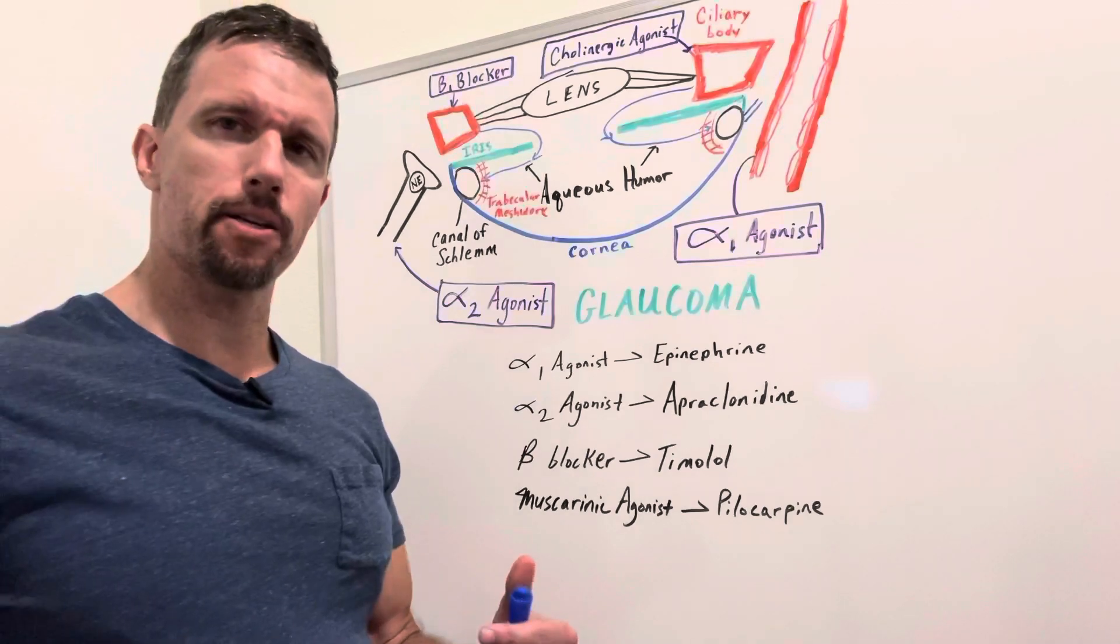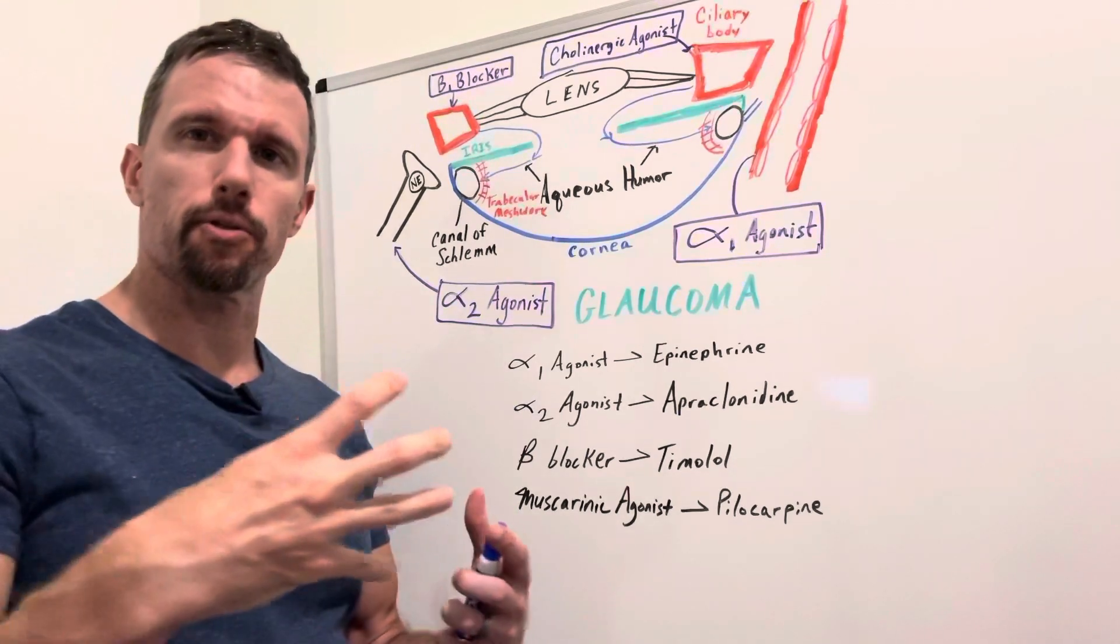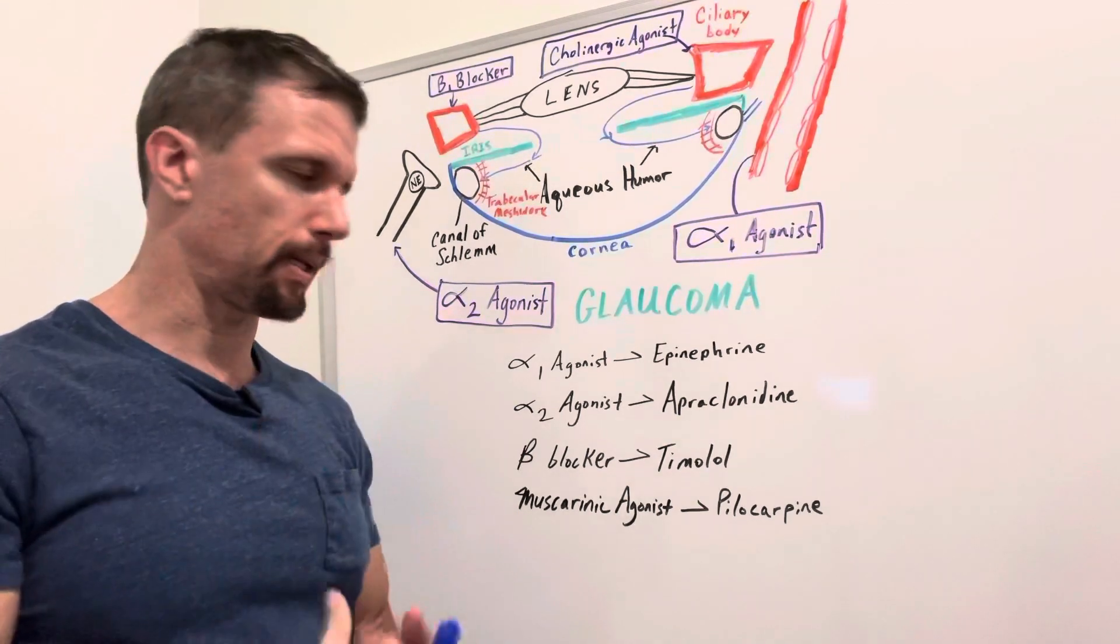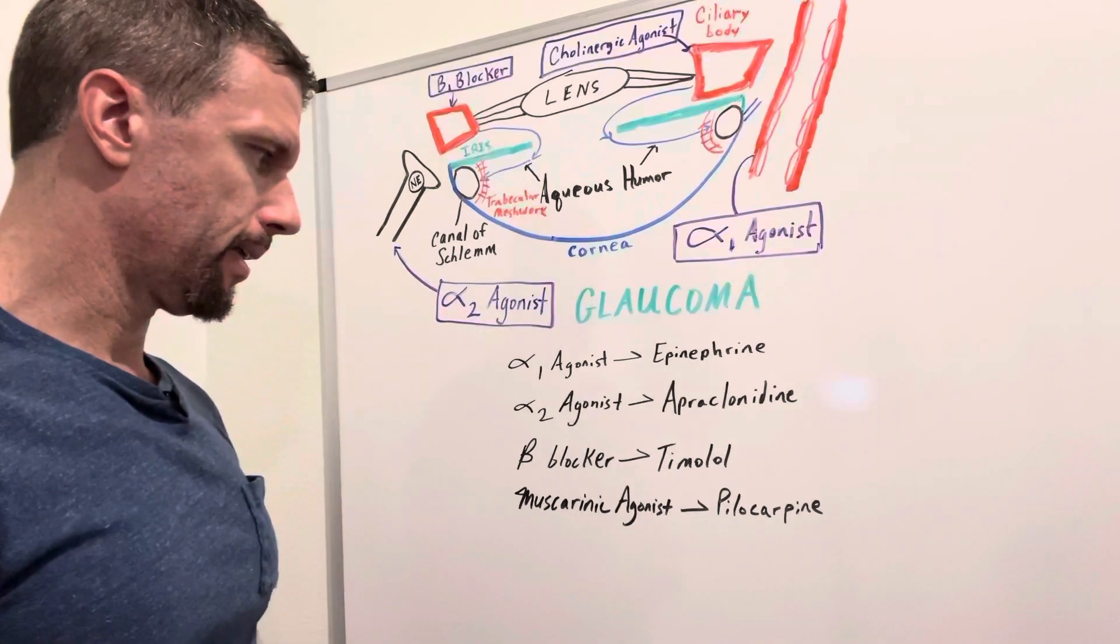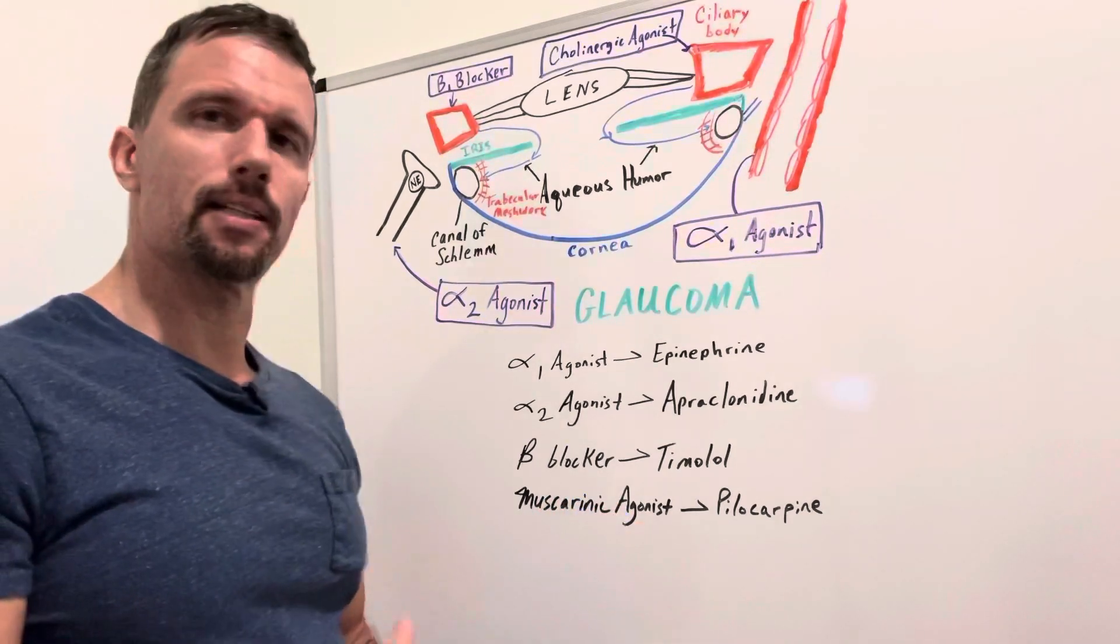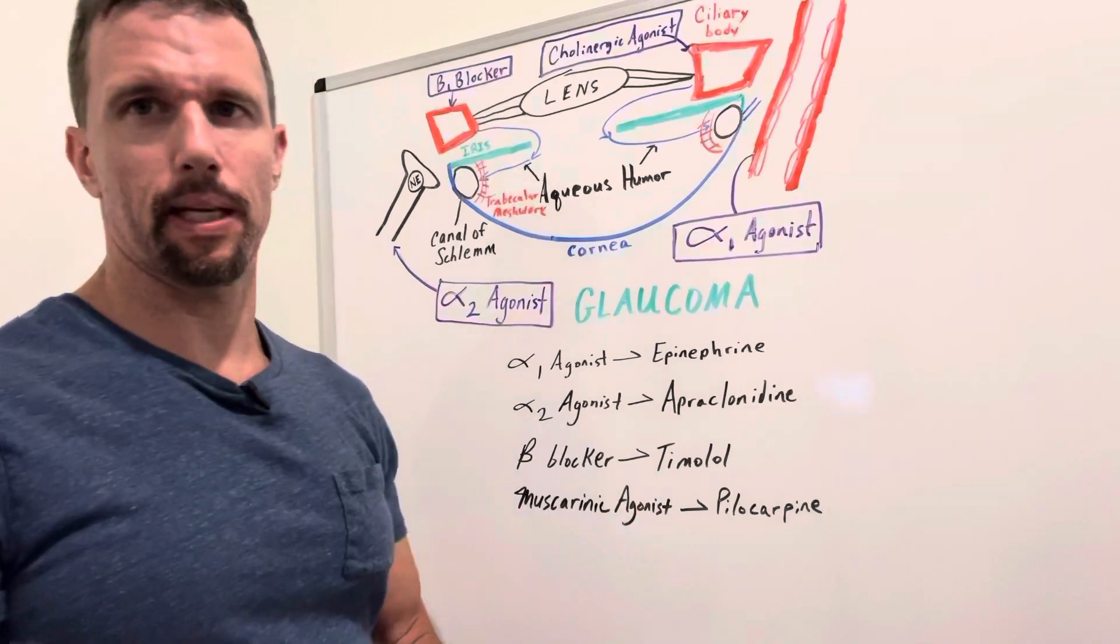Muscarinic, that means that the parasympathetic nervous system, those are the receptors for the autonomic parasympathetic nervous system. And if it's agonist, it's going to promote the parasympathetic activity.